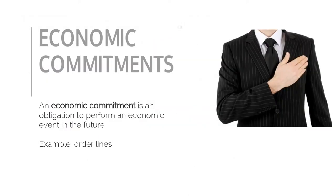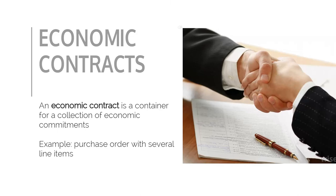We define an economic commitment as an obligation for an agent to perform an economic event in the future. For example, an order line, which actually represents two commitments — for one agent to deliver something and for another agent to pay. A contract is a container for a collection of commitments with additional rules specifying how the commitments should be fulfilled, in particular rules for handling exceptions and deviations. An example is a purchase order with several line items.